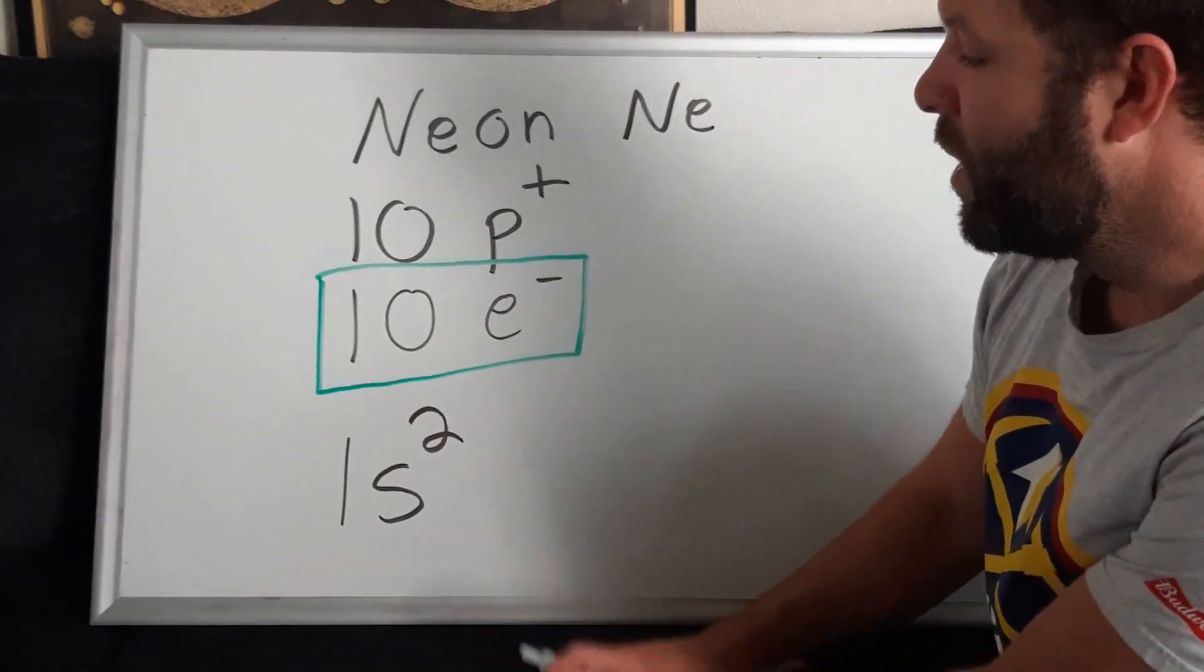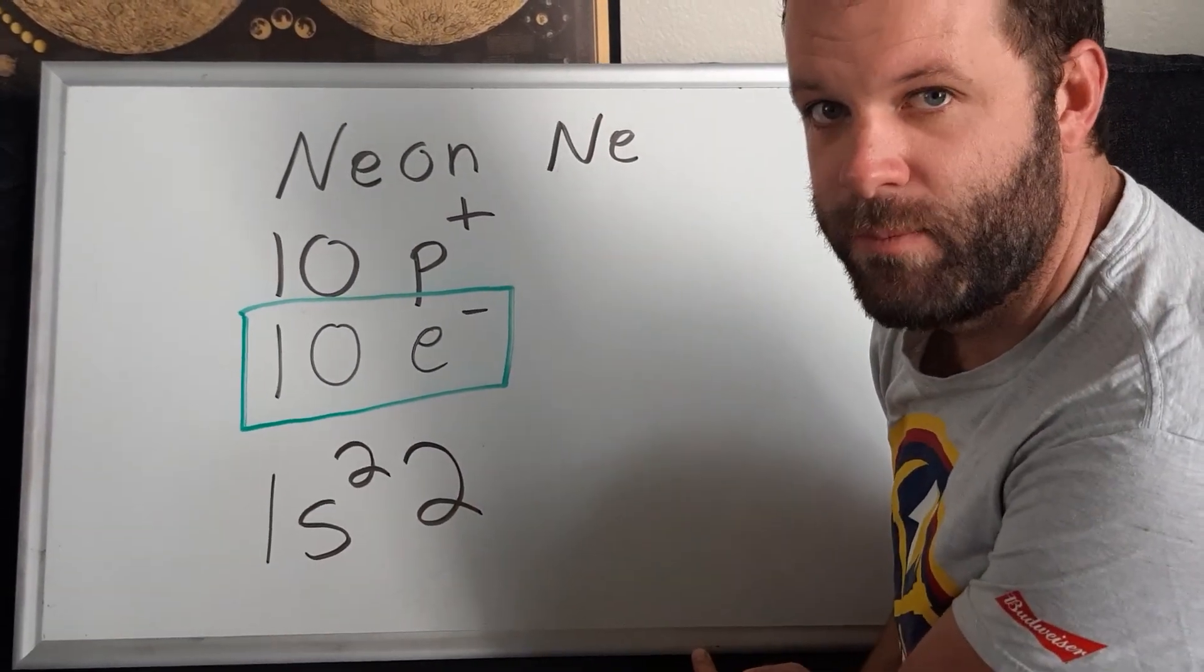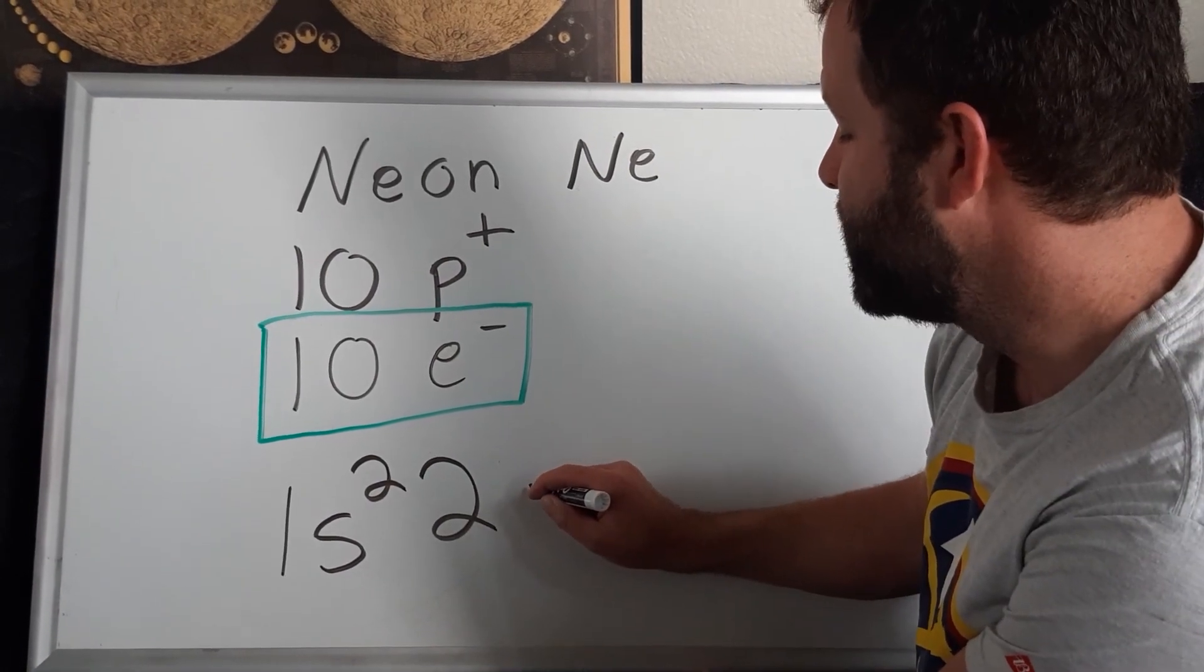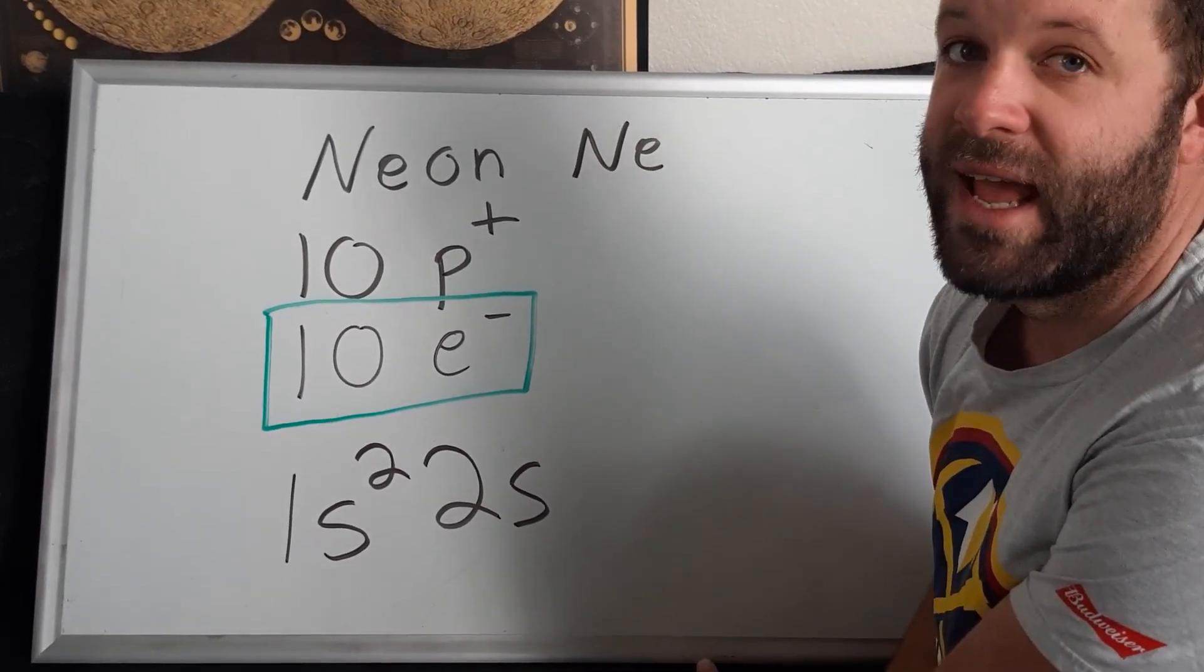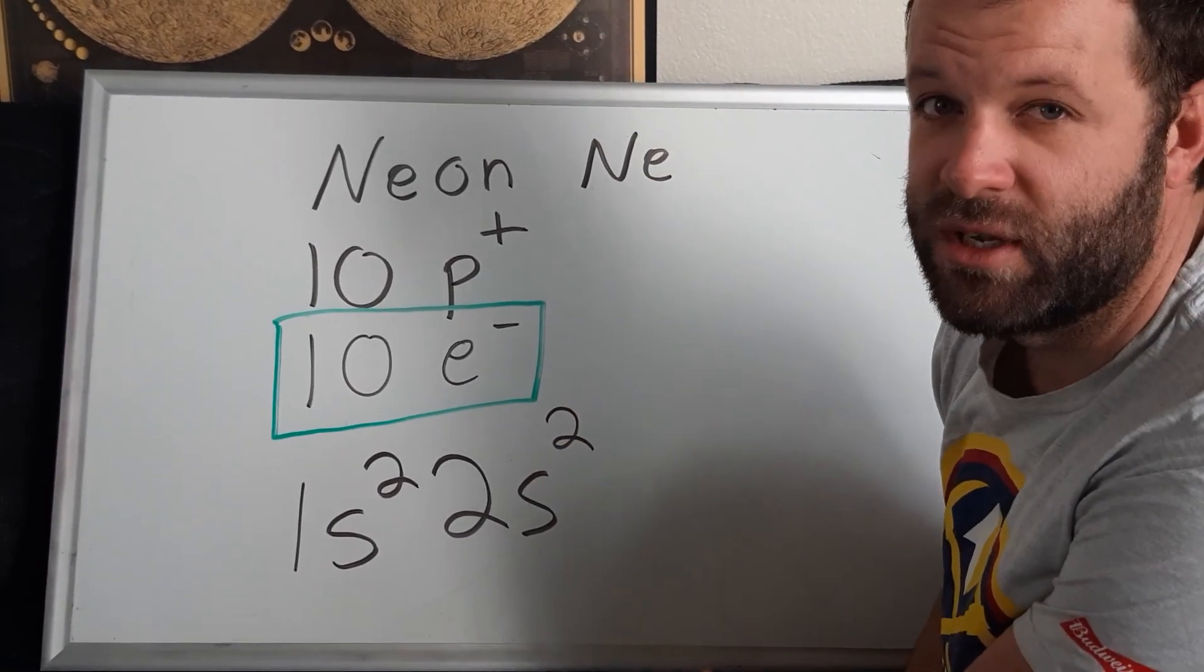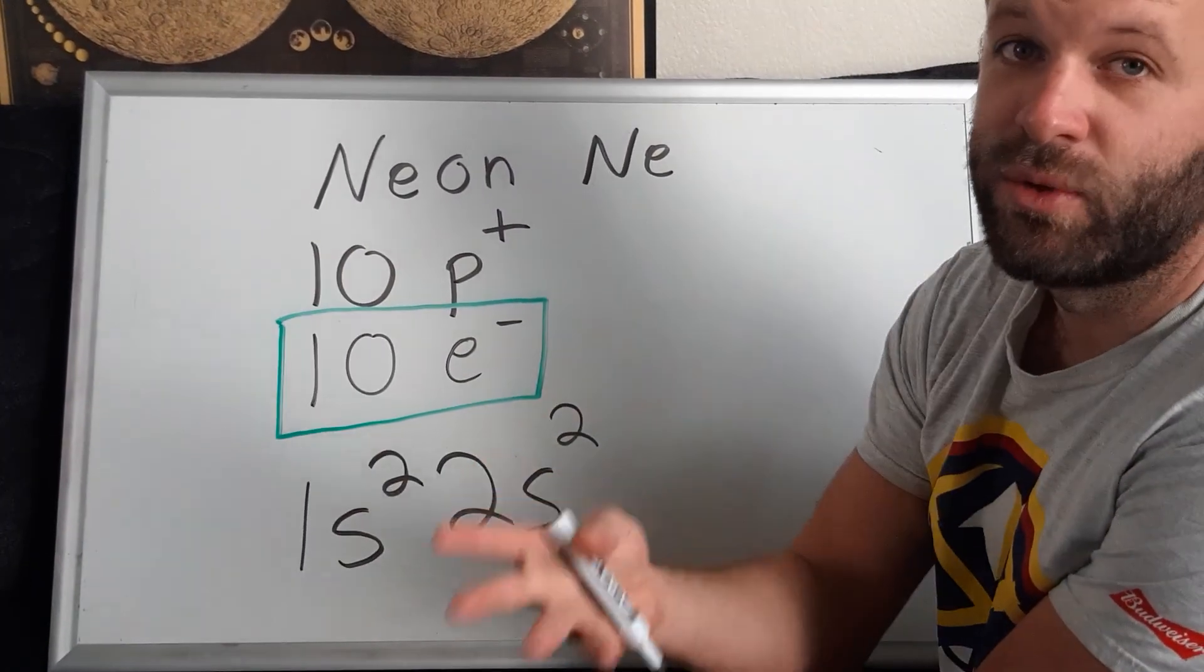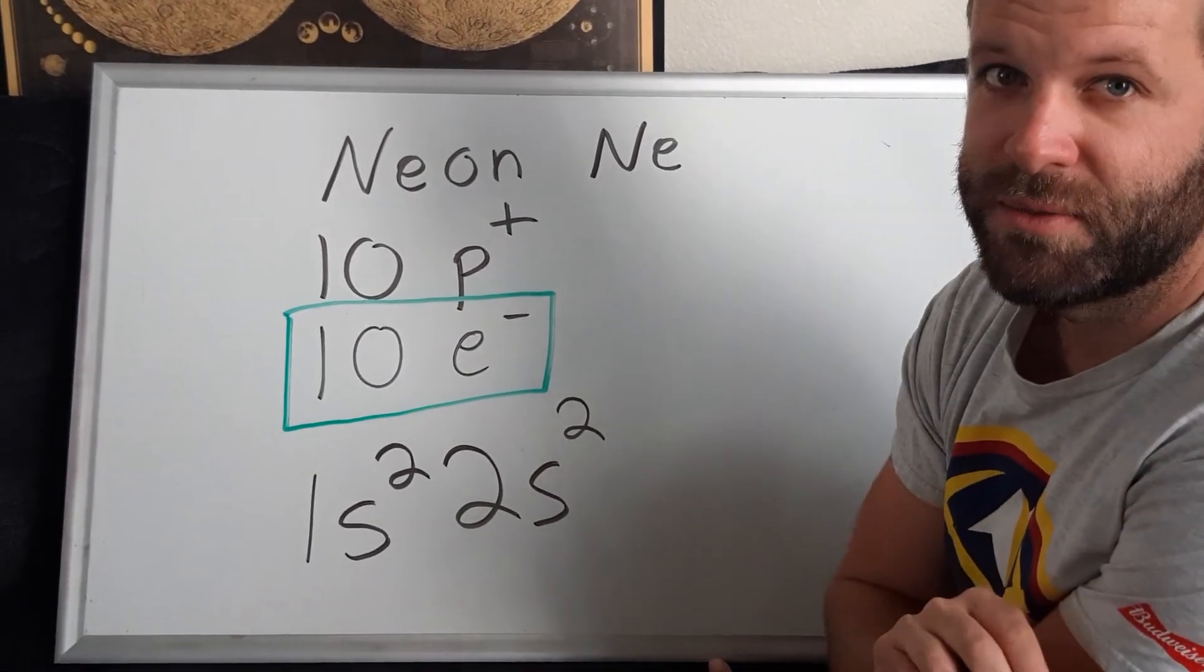Now when we go into the next energy level, well that's our second energy level. And we know using our periodic table or periodic chart that the second energy level has two types of orbital. The first orbital is, once again, the s orbital that can hold two total electrons. All s orbitals can only hold two electrons max. It doesn't matter if it's 1s, 2s, 3s, 4s, etc. All s orbitals can only hold two electrons.